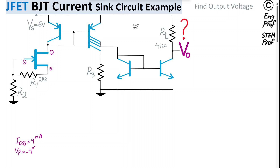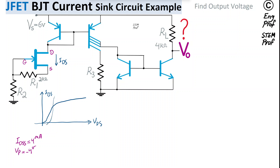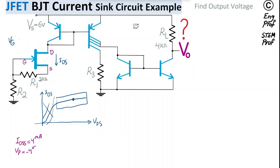Looking at IDS of the n-channel JFET as a function of VDS for a nominal VGS selection, we don't want to operate in the ohmic region — that is the region we want to avoid. The active region is where we want to operate as a good current source or sink. To stay in the active region, we need the gate voltage to be less than drain voltage by at least the pinch-off value of 4 volt.